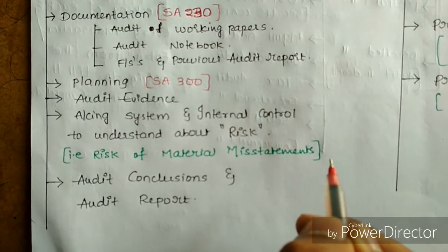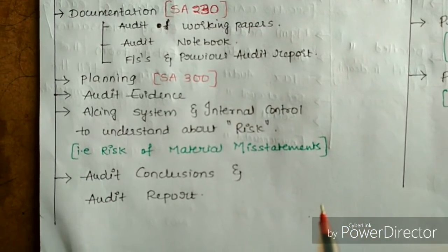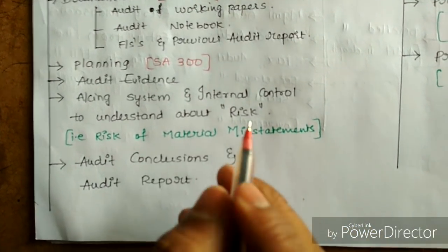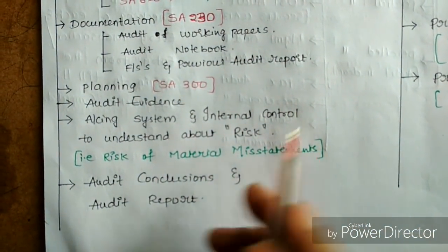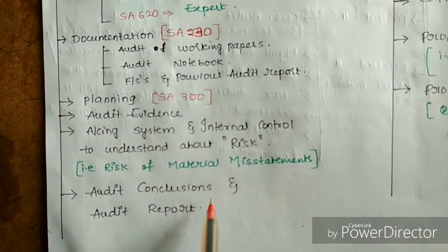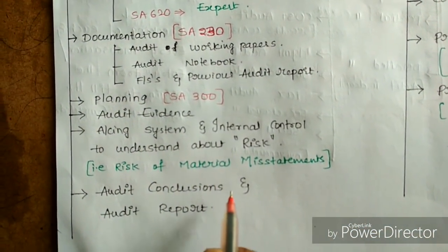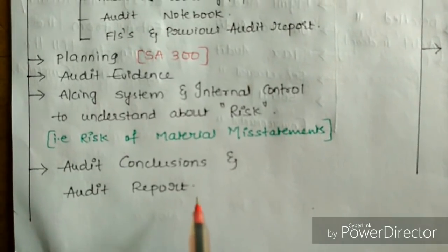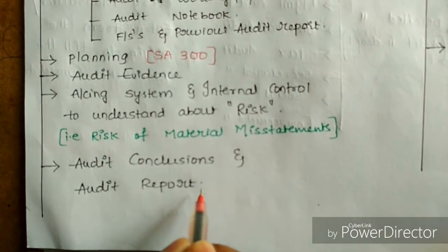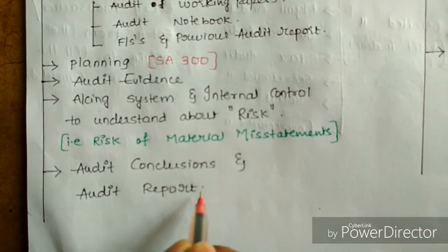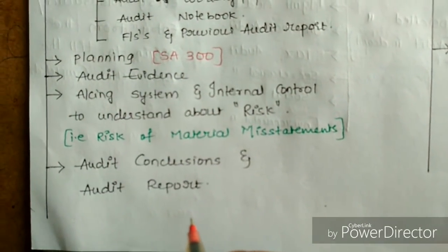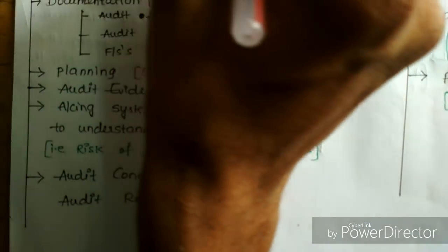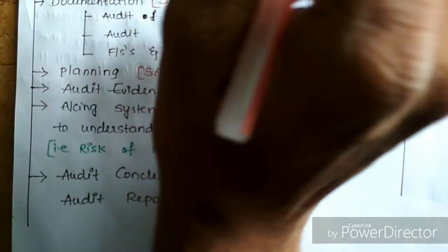With respect to framing financial statements, after completion of all of this the auditor should conclude the audit and give an audit report — meaning giving his opinion based on all these matters. These are the basic principles which govern auditing.